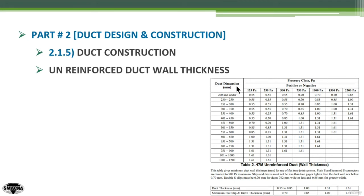The duct dimension represents the row and the pressure classification represents the column. Intersecting the row for 70 cm with the 500 Pascal column gives the sheet metal thickness. For this example, the sheet metal thickness is 1.31 mm.